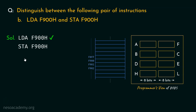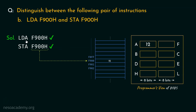On the other hand, STA F900H has the mnemonic meaning 'store the contents of the accumulator in this particular location.' Say the accumulator currently holds the value 12. Since STA is also direct addressing mode, the microprocessor knows which memory location to point to, and execution stores 12 into memory location F900. So LDA loads the accumulator from the address, while STA stores the accumulator's content into the address.